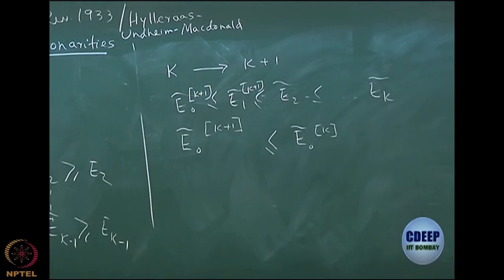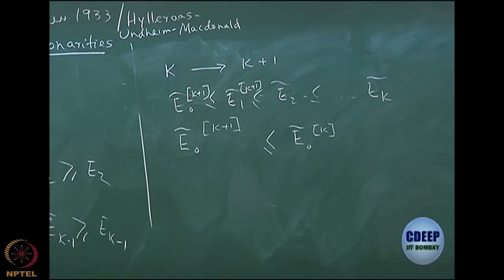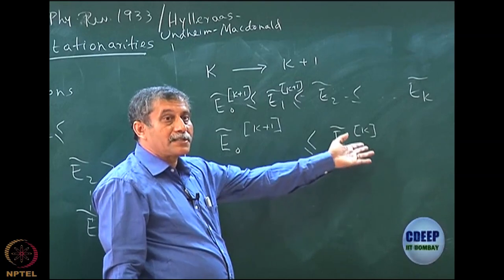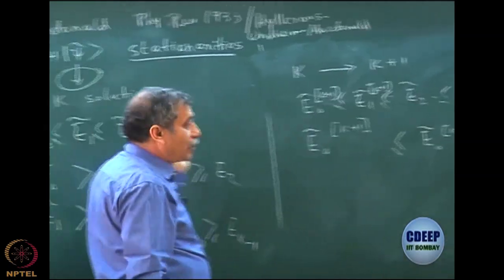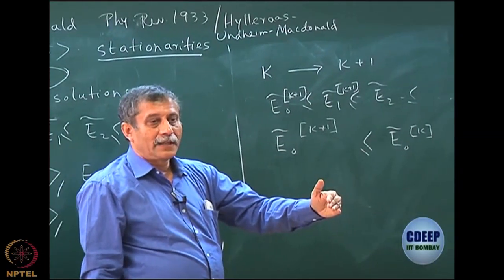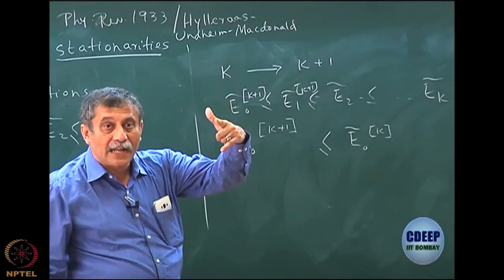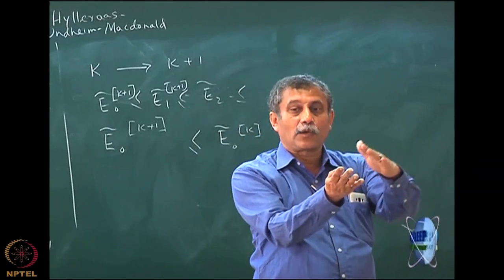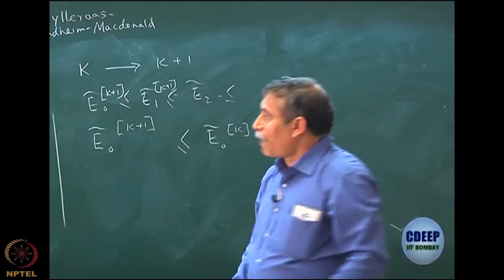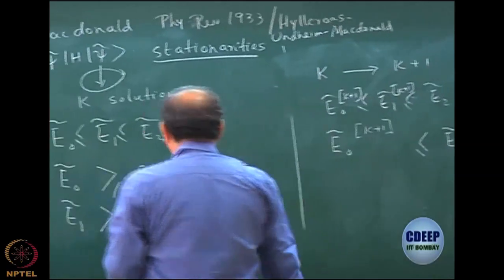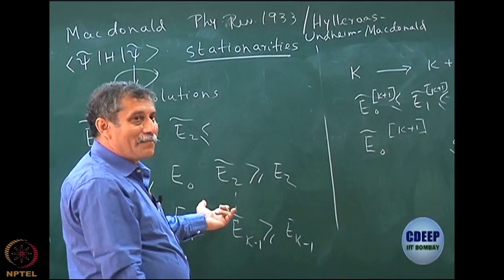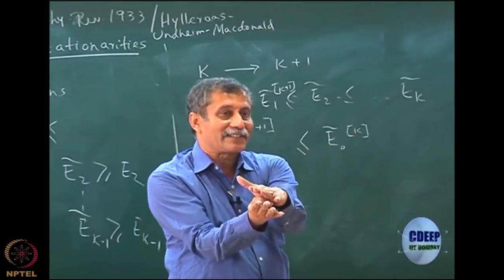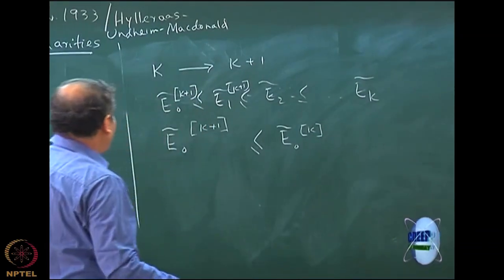Now I know from the theorem, lowering the energy is very good for other states also because each of them is an upper bound. So each of them comes nicely closer and closer to its own state energies. But please remember: when I compare, this is an addition of one function. If you compare a k-dimensional basis with another arbitrary k plus 1 dimensional basis, this is no longer true. I must take this basis and only add one more — I cannot change the basis — then only the theorem is true.